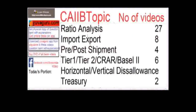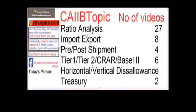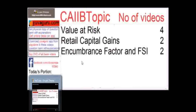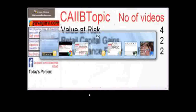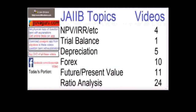Additional topics include: ratio analysis, import-export, pre- and post-shipment, tier 1 and tier 2 capital, CRAR, Basel horizontal and vertical disallowances, value at risk, retail capital gains, and income. For CIB: accounting basics, balance sheets, P&L, bank accounts, bond calculations, capital revenue expenditure, NPV and IRR, depreciation, trial balance, forex, present and future values, and ratio analysis.